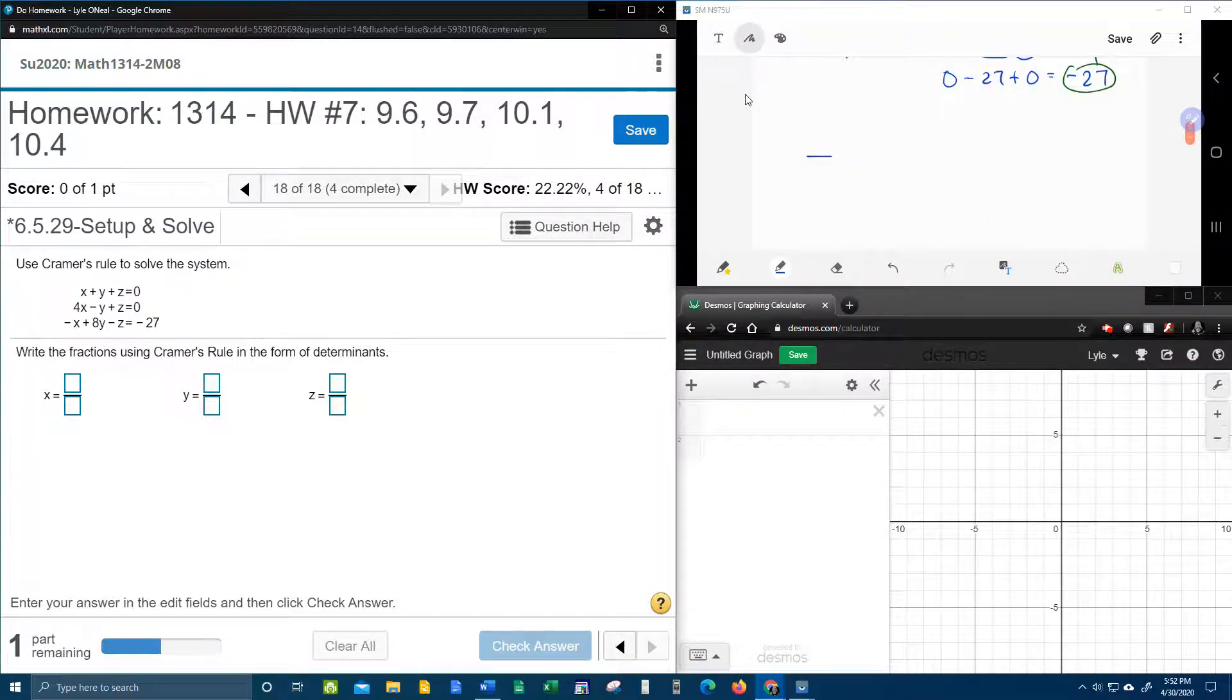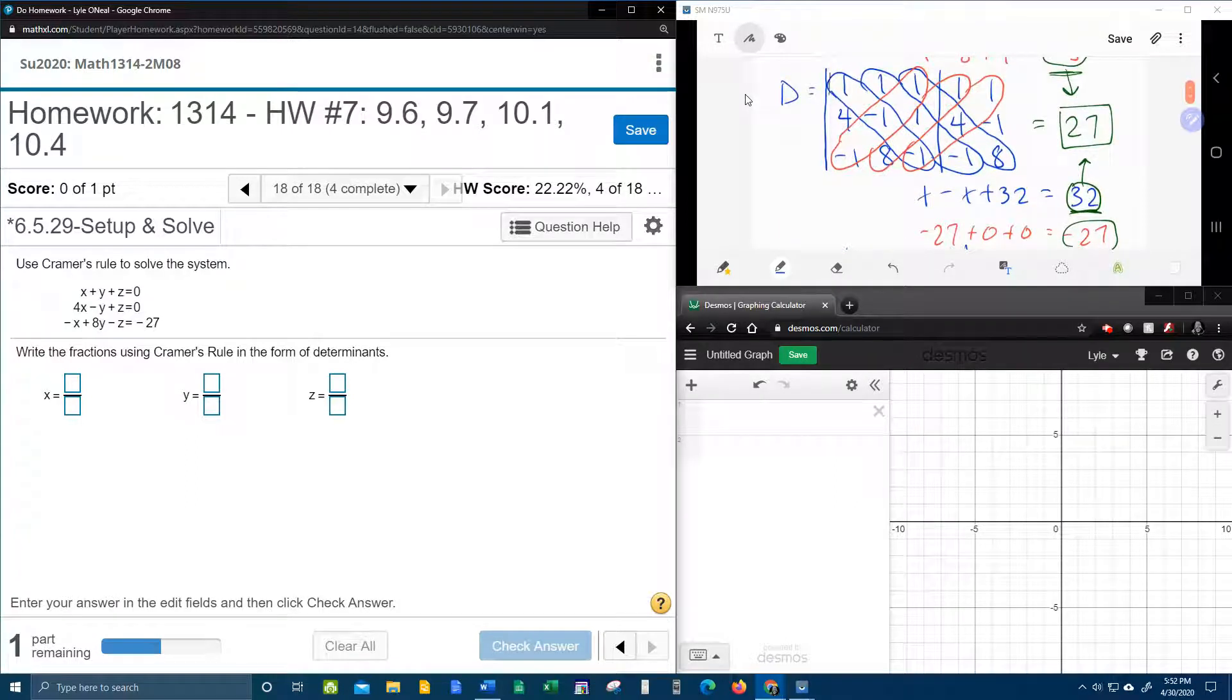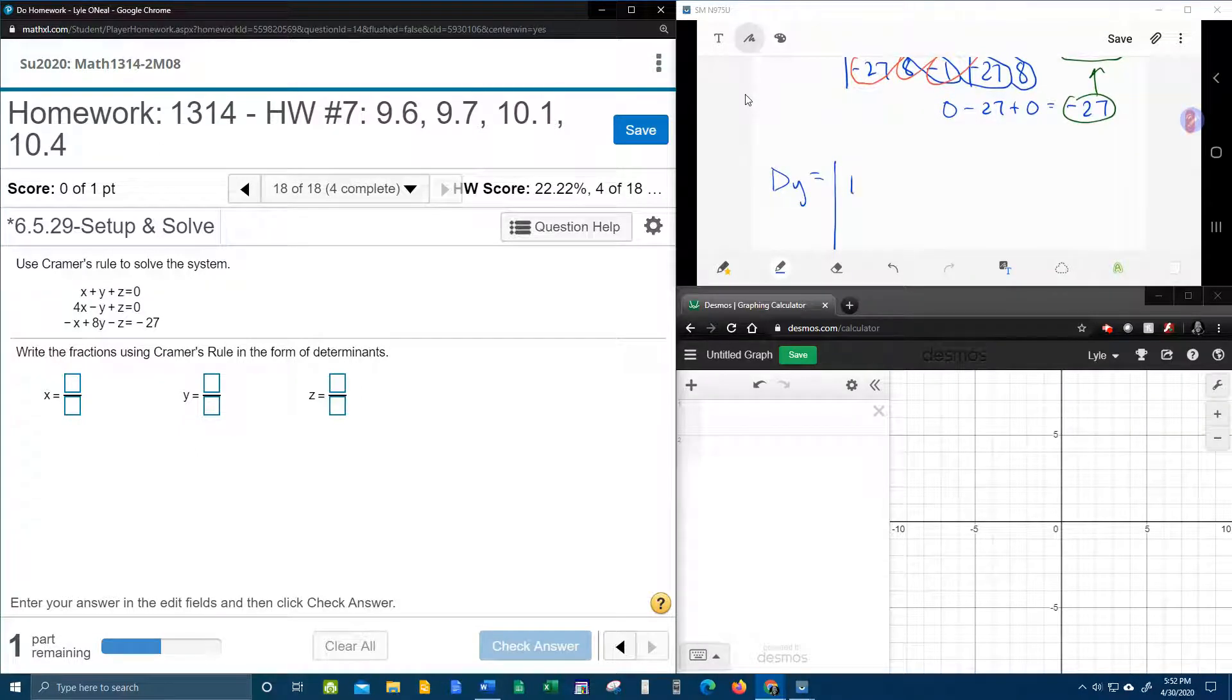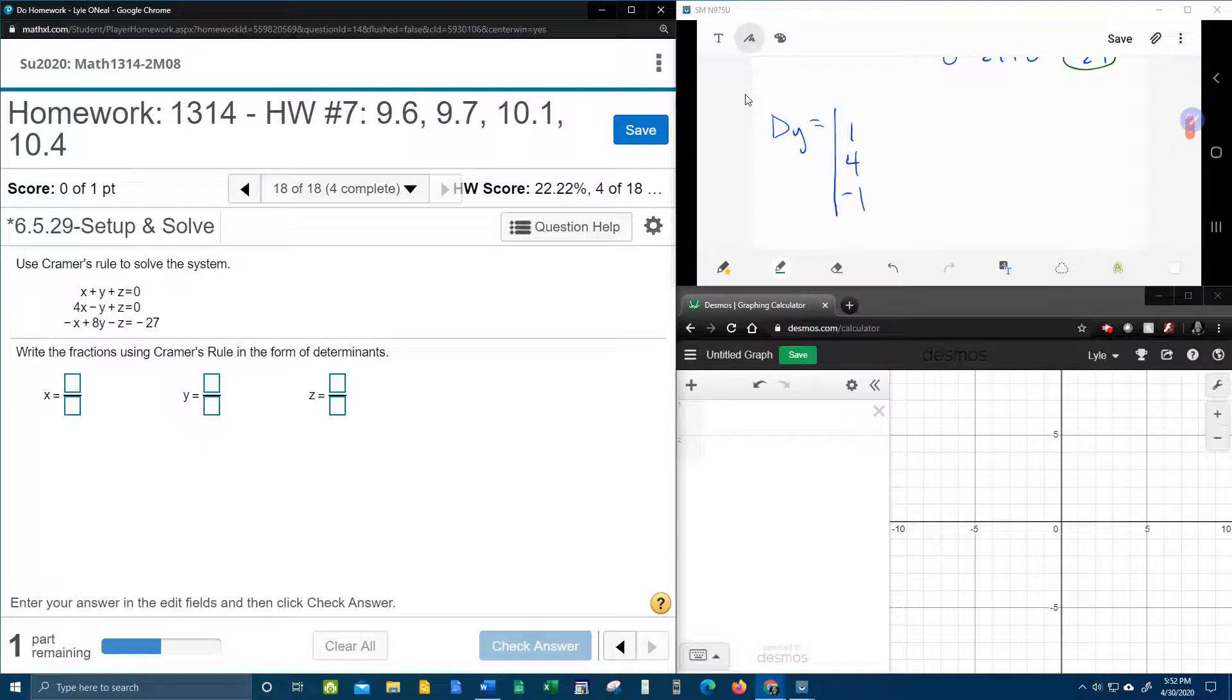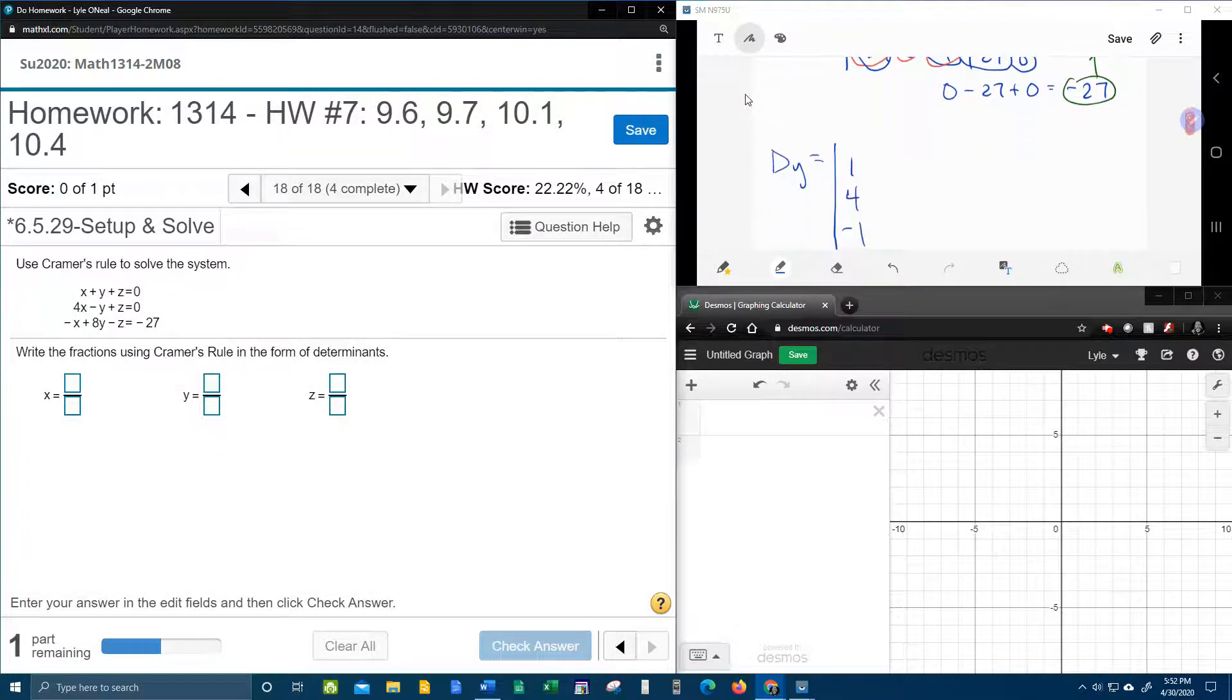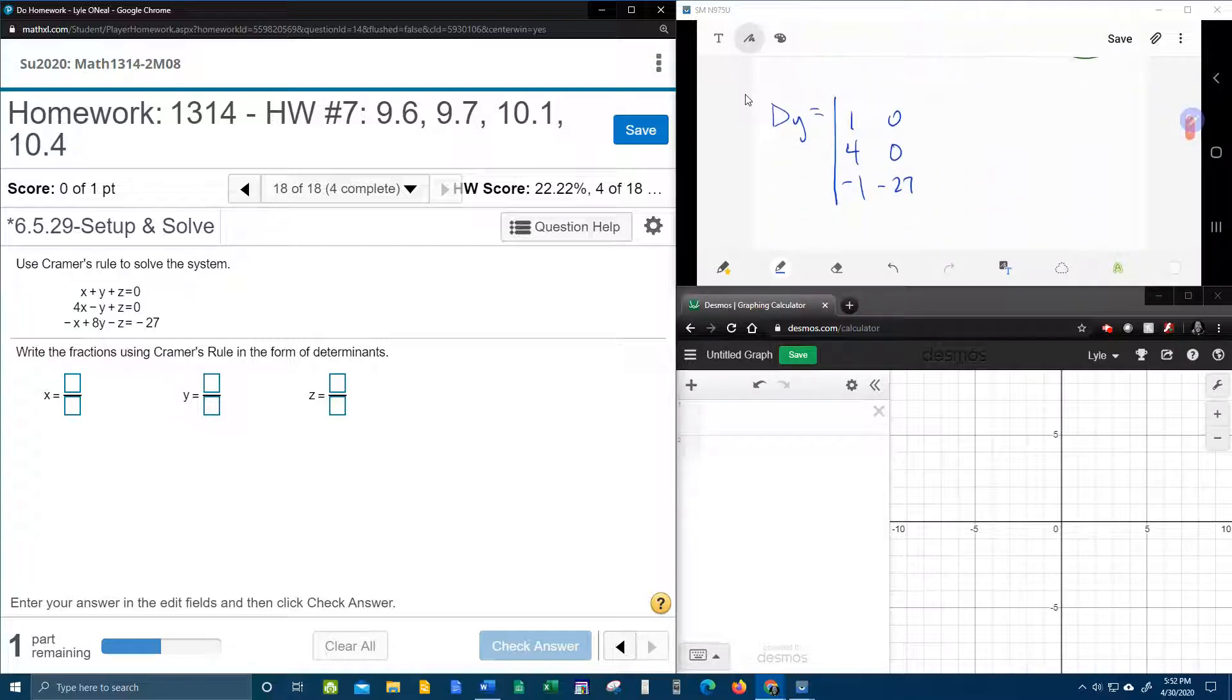Now we need d sub y. And so d sub y says, now we're going to take, we're going to get to keep the x's. So 1, 4, negative 1. But now we're going to have to replace the y's with the constants. So the 0, 0, negative 27, take the place of the y's. And we get to keep the z's, 1, 1, negative 1.